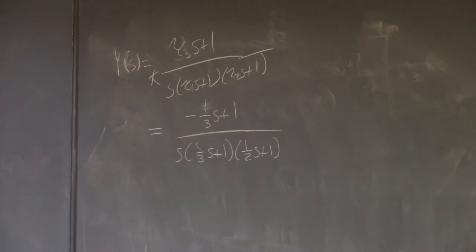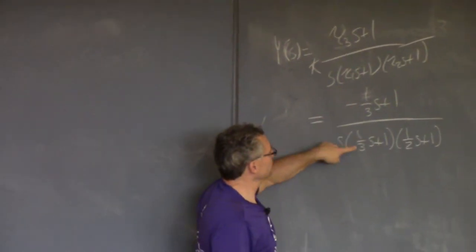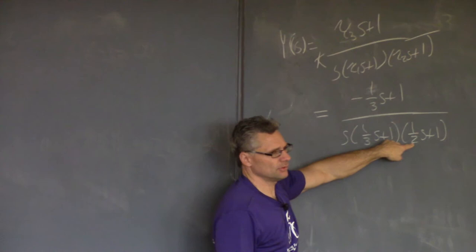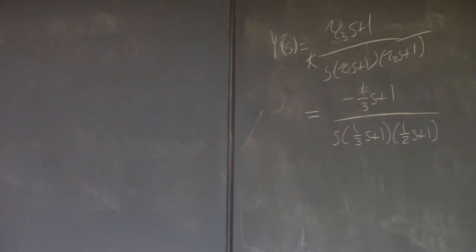I'm telling you, you can rearrange this thing here to look like this. And now you know what the tau 3 is, the tau 1, and the tau 2. OK, so the k, I guess, in this point is actually just equal to 1. Is that what I have? Yeah. So there's no need for a k here.